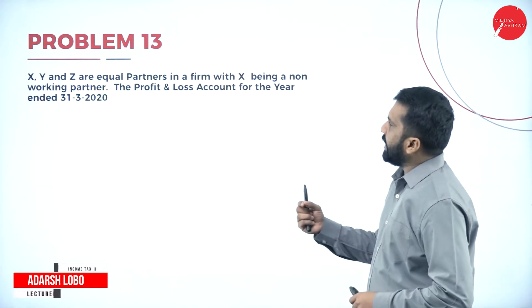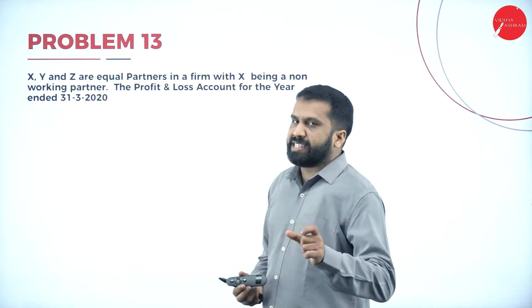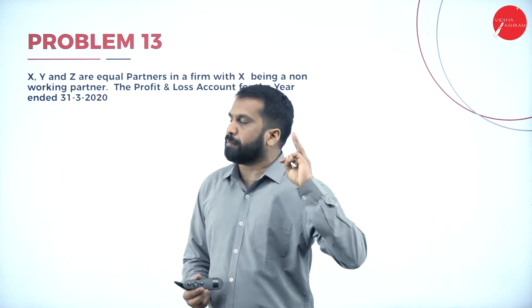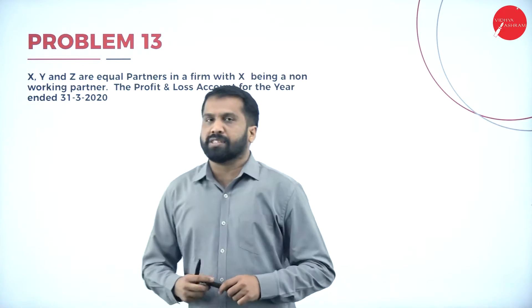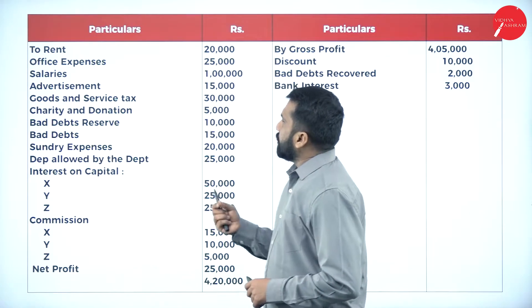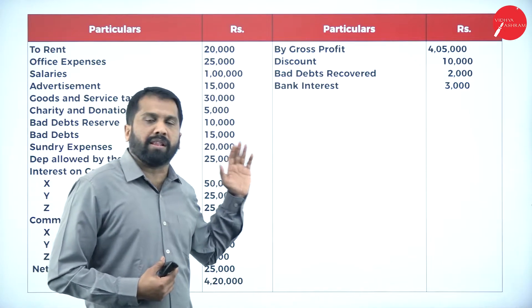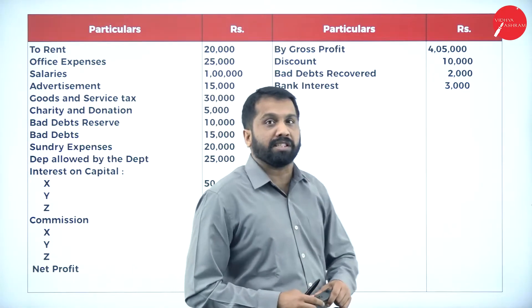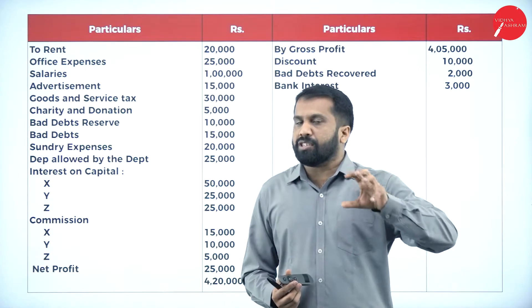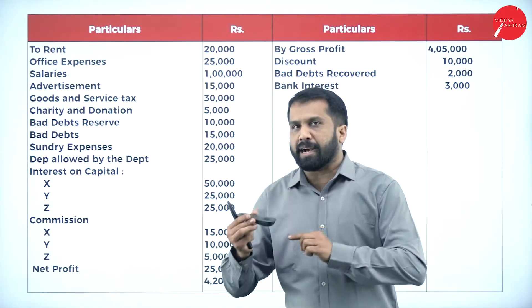In today's session we will work out one problem on your assessment of a partnership firm. The question: XYZ are equal partners in a firm, with X being a non-working partner. The profit and loss account is for the year ended 31st March 2020. If you have not watched the previous session, please go back and watch, because I explained the whole format and procedure for assessment of a partnership firm there.